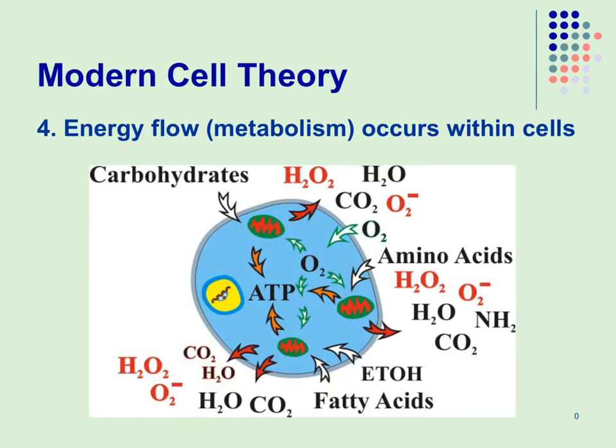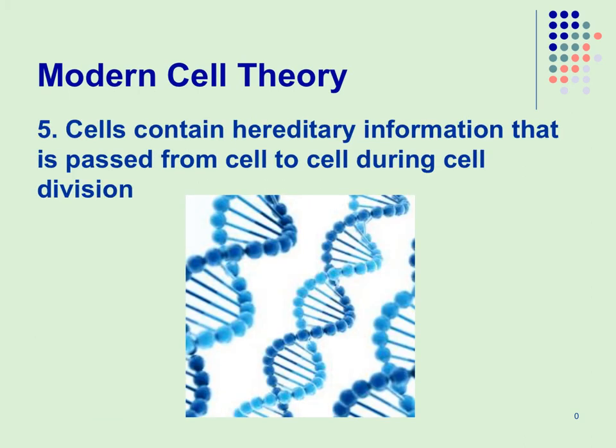Because of the modern electron microscope we added to the modern cell theory: that cells have metabolism. The mitochondria — which you should have learned in middle school is the powerhouse of the cell — is where cells convert food into usable energy, which we'll talk about later in this unit. And obviously, that cells contain DNA. The electron microscope allowed us to see those structures and we've added to the modern cell theory.